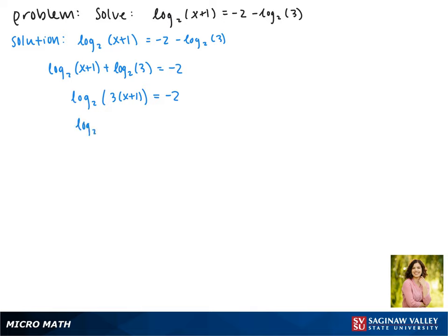Simplifying what's inside of the log, this gives us log base 2 of 3x plus 3 equals negative 2.